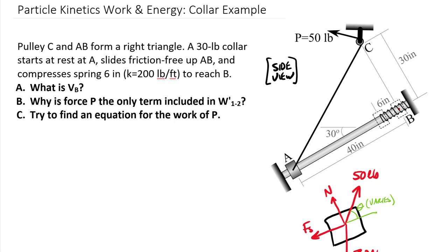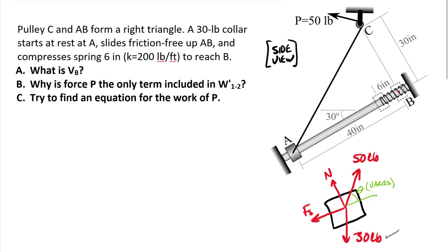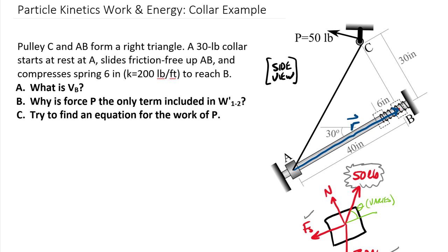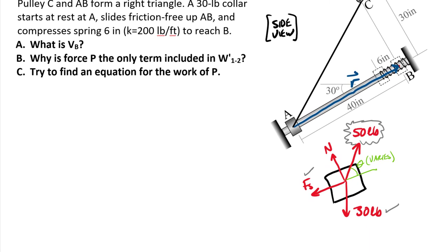Going through these forces: we know that our gravitational potential energy will take care of our weight force. The spring energy will take care of the spring force. Here is the 50 pounds, one of those external forces that needs to be included in W prime from one to two. The normal force - our displacement is going to be up this arm. That R is perpendicular to N, so we have no work from the normal force. Really just one force overall included in our work term.